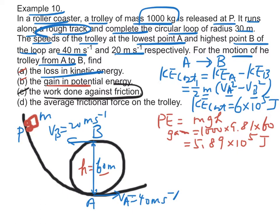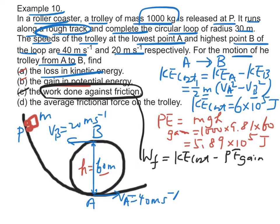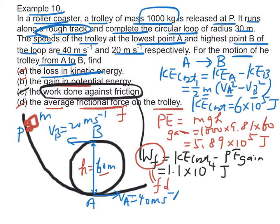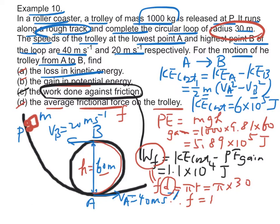Part C: the work done against friction is equal to the loss in KE minus the gain in PE, which is equal to 1.1 times 10 to the power 4 joules. Part D: find the average frictional force on the trophy. Work done against friction equals frictional force times distance traveled. Since the distance traveled from A to B is equal to πR, which is equal to π times 30. Therefore, the average frictional force equals 117 N.